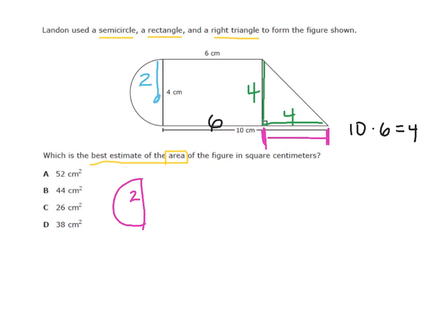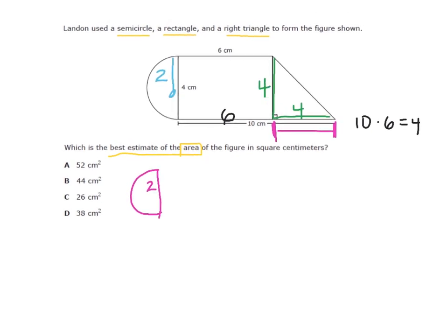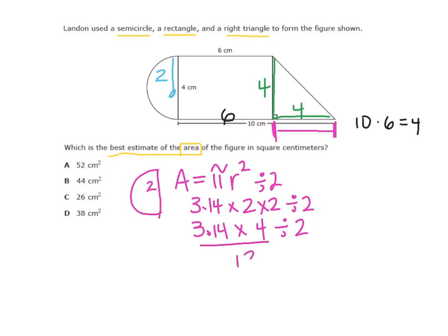The area for a semicircle is the same as a circle but you divide by 2, so area of this is π r squared and then divide by 2. That's 3.14 times 2 times 2 and then divide by 2. If I keep going, 2 times 2 is 4, and then divide by 2. I'm going to estimate this and say these two together is pretty close to 12, and 12 divided by 2 is 6. So for right now I have 6, and I'm going to do the rectangle and the triangle.